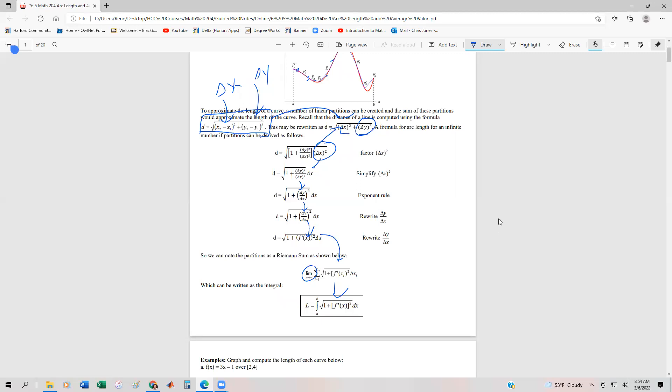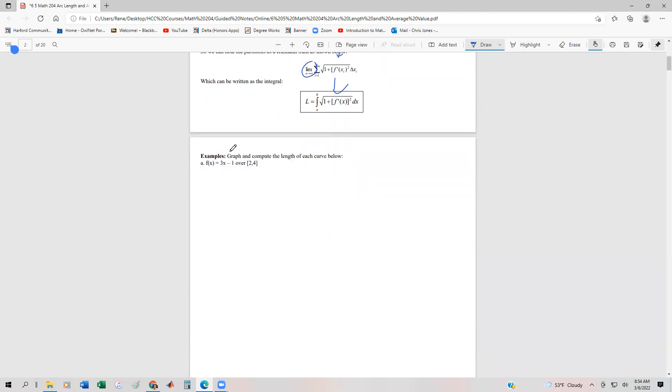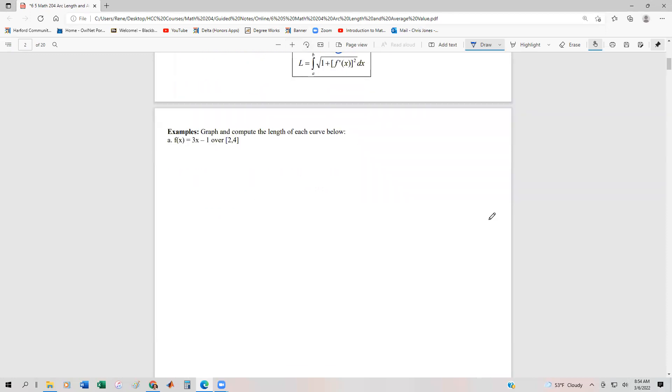So let's take a look at a really basic example of this. And we're going to do this one in two ways. So we want to graph and compute the length of each of the curves below. So we have 3x minus 1 over 2 comma 4. So one way to do this without doing any sort of calculus is because it's a line, we can use the distance formula.